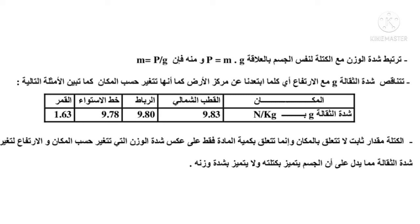ملاحظة: تتناقص شدة الثقالة G مع الارتفاع، أي كلما ابتعدنا عن مركز الأرض. كما تتغير حسب المكان في الكرة الأرضية. على سبيل المثال: في القطب الشمالي G = 9.83 N/kg، في مدينة الرباط G = 9.80 N/kg، عند خط الاستواء G = 9.78 N/kg، وعلى سطح القمر G = 1.63 N/kg.